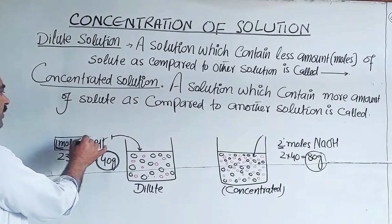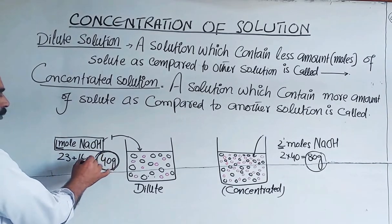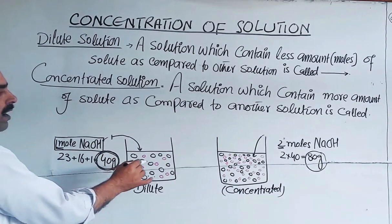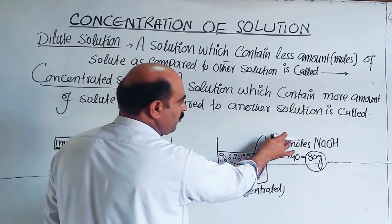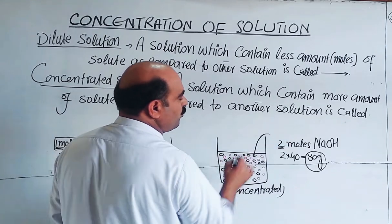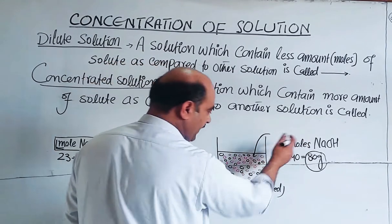One container has one mole sodium hydroxide — that is 40 grams sodium hydroxide. The other container has two moles sodium hydroxide — that is 80 grams sodium hydroxide.